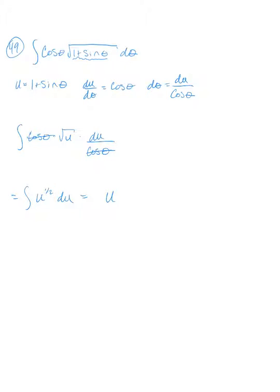Increase the exponent by 1, becomes 3/2. Divide by the new exponent or multiply by its reciprocal, then replace u. So this becomes 2/3 times (1 plus sine theta) to the 3/2 plus c.